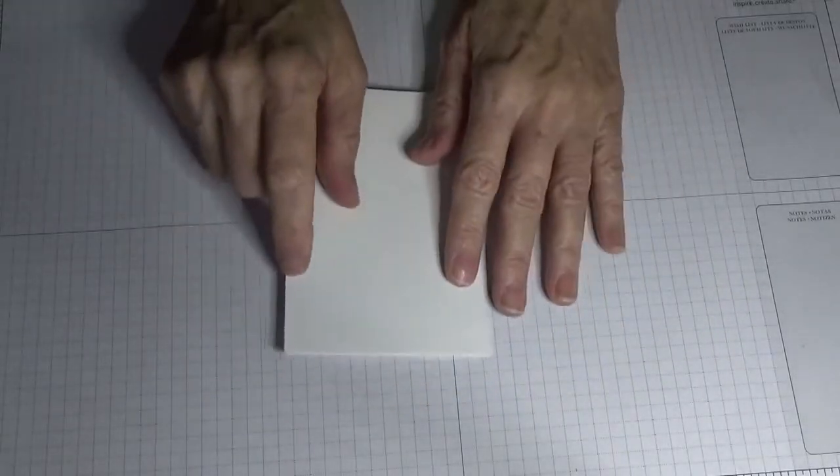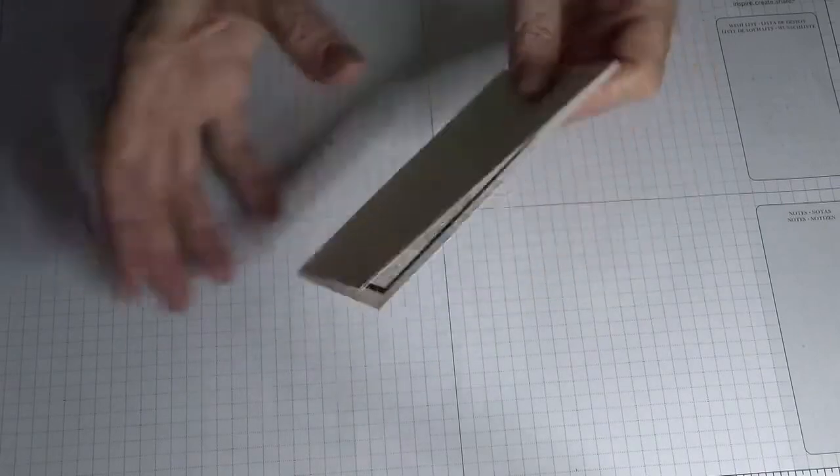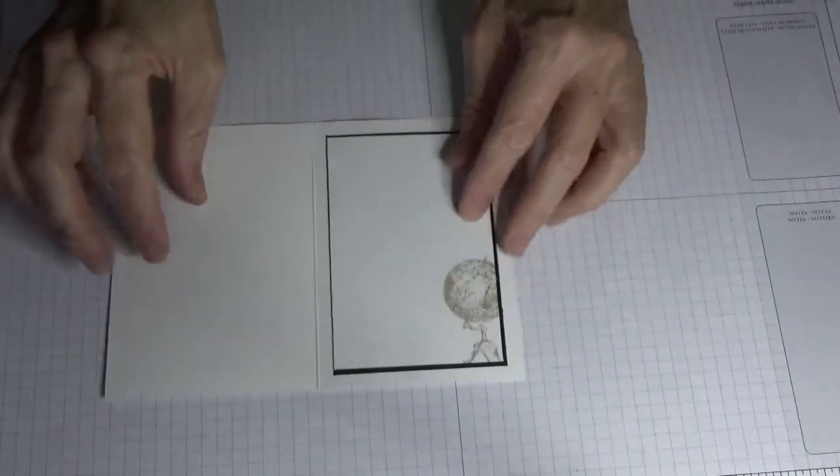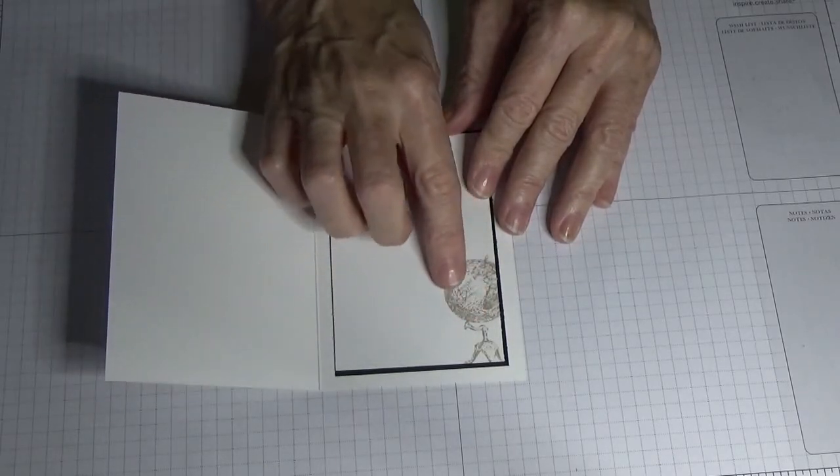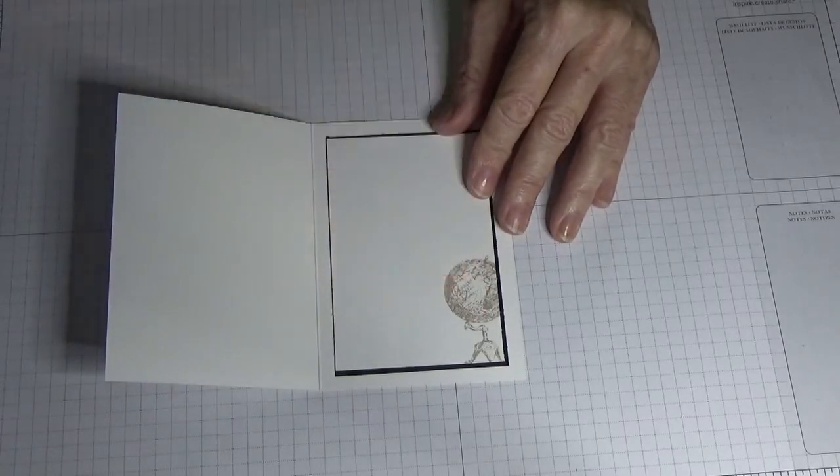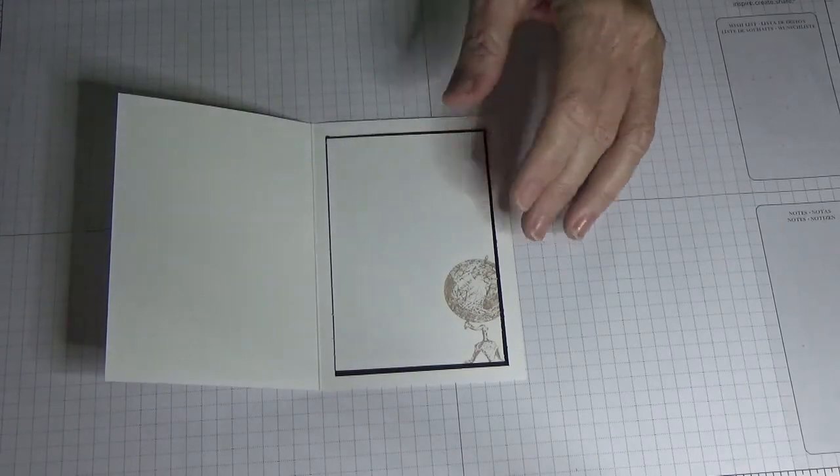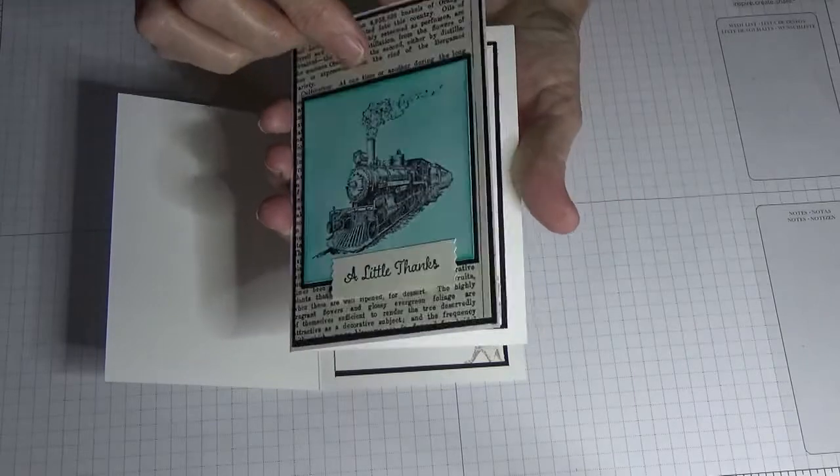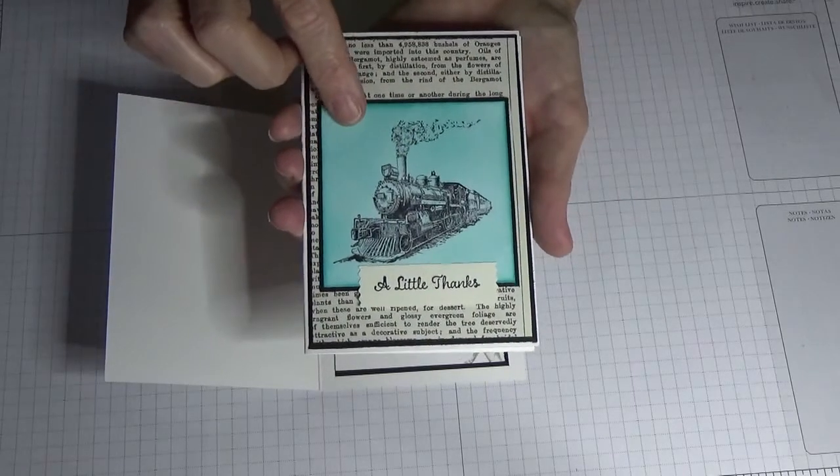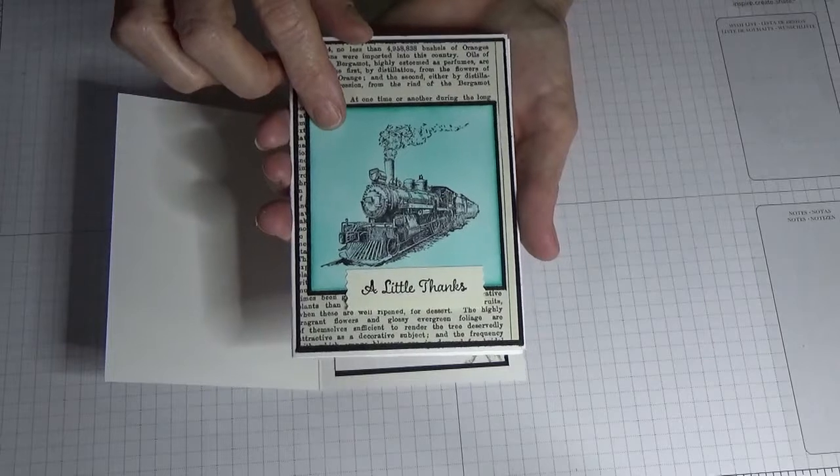You've literally just got to fold them in half, it's just so easy. Now I've already done the inside of this one because I like my cards to continue on inside as well. So you'll see, like for the train for instance, I've done the train outside.